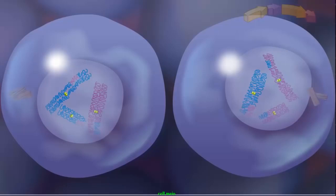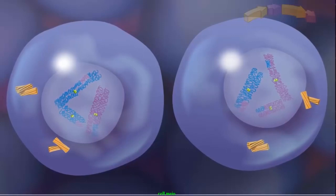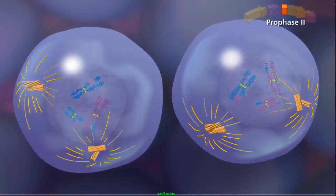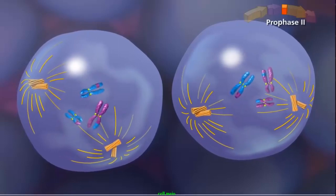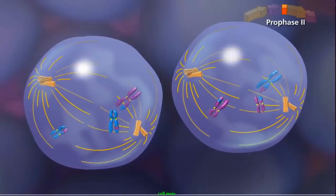Since the final product of meiosis I is two haploid cells, meiosis II begins without the chromosomes going through another round of DNA replication. Centrioles again duplicate and begin moving to opposite poles of each cell. In prophase II, the sister chromatids condense while the spindle starts to form as the nuclear envelope disappears.